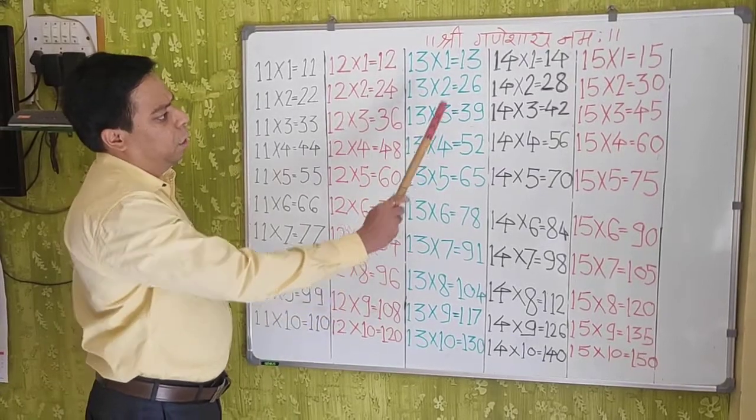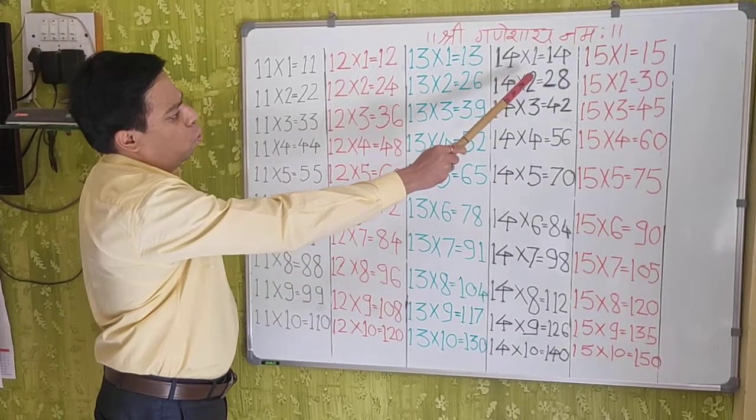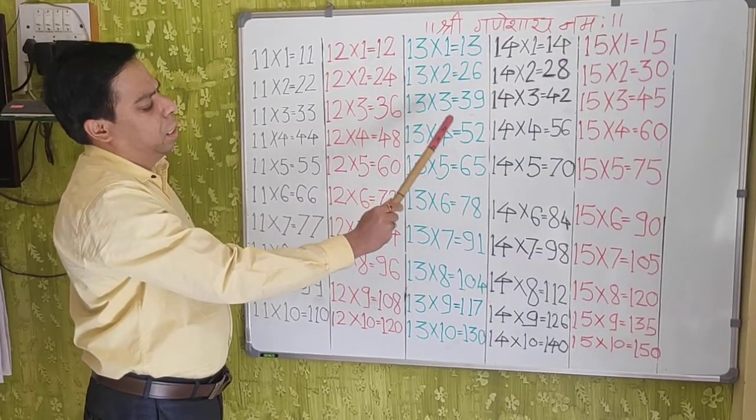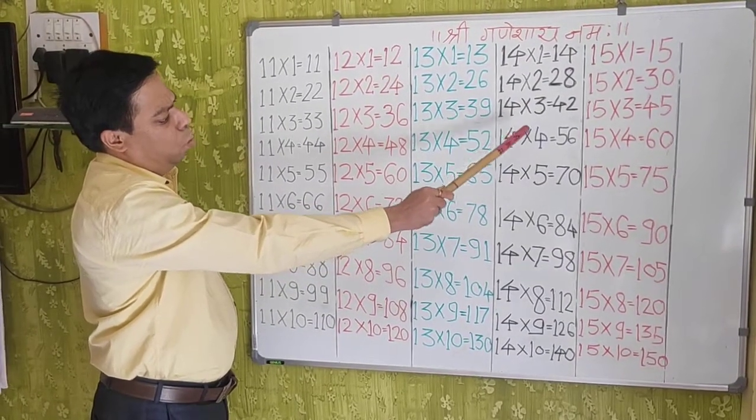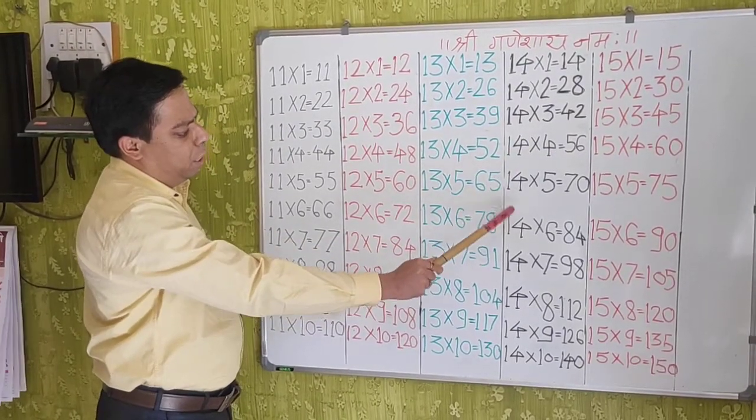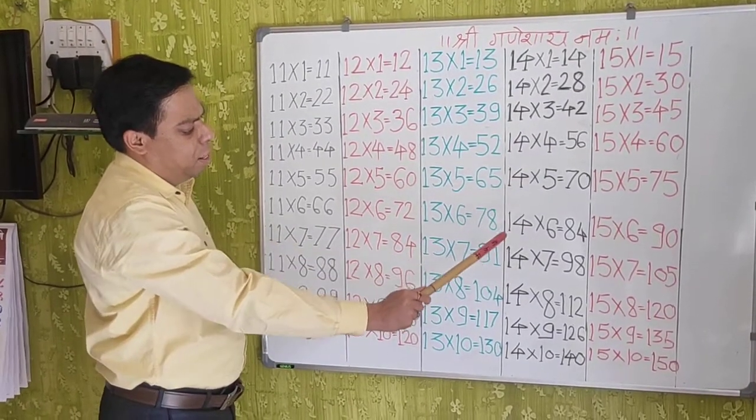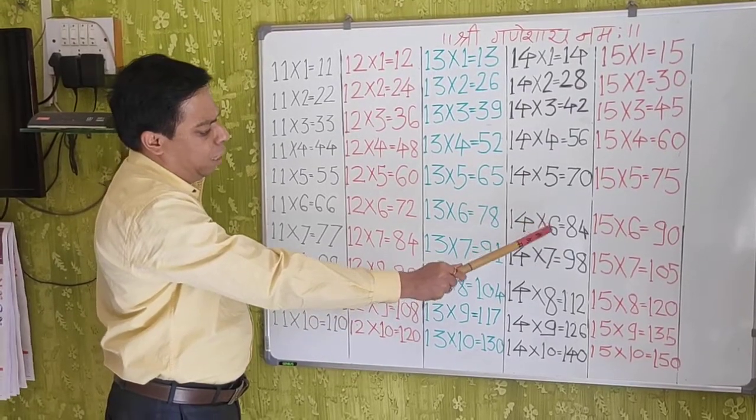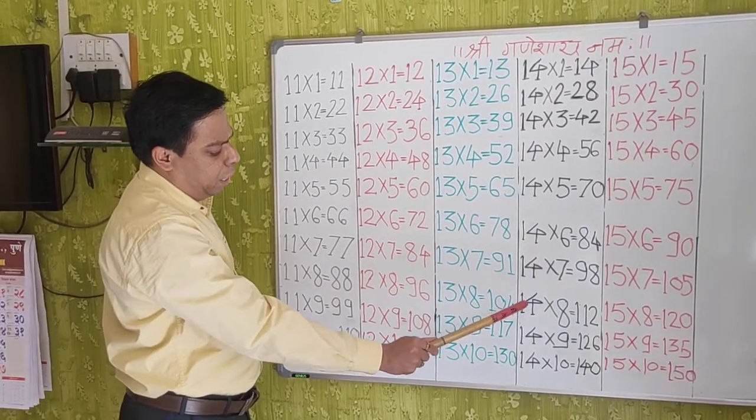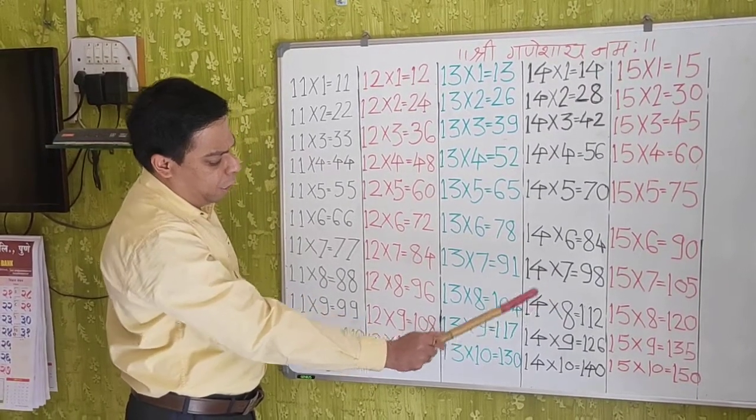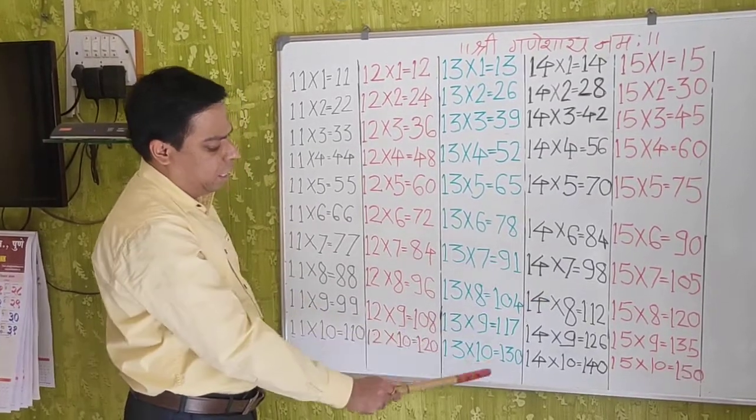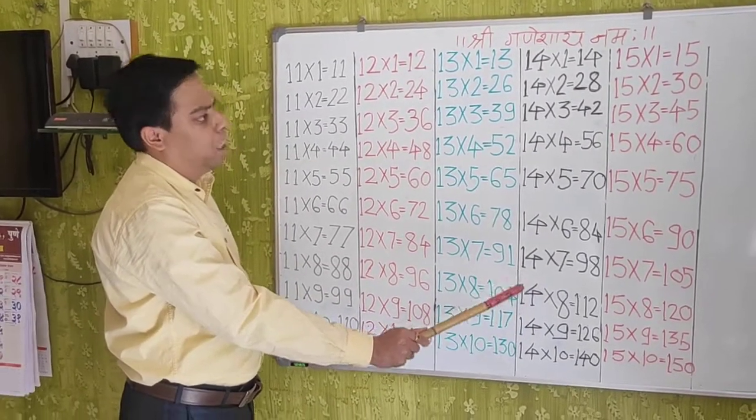Next table: 14×1=14, 14×2=28, 14×3=42, 14×4=56, 14×5=70, 14×6=84, 14×7=98, 14×8=112, 14×9=126, 14×10=140.